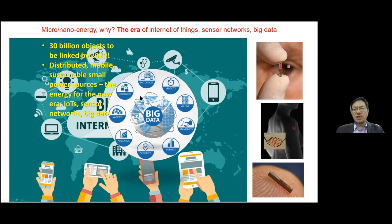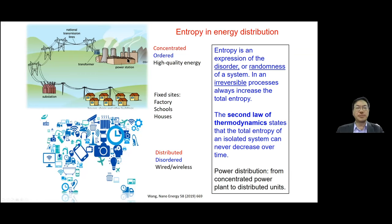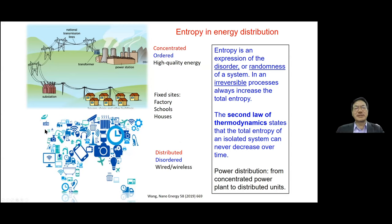We want to know our position, velocity, and health information. This is the era of Internet of Things. Even medical devices are becoming very small. The question is, how do we power such small devices, even though each needs very little power? That's the objective of our research — to meet the needs of this new era. Looking at the big picture, we've moved from concentrated energy sources through cables delivered to homes and universities, to distributed, mobile, wearable, and wireless electronics.